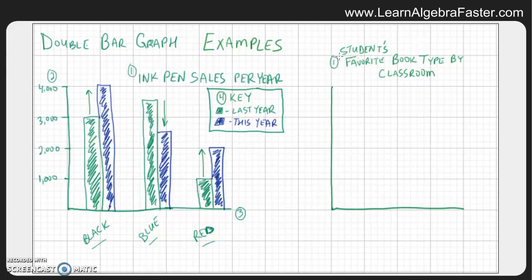So we're going to have to measure all three of those things. Obviously the number is going to be on the vertical axis. We'll go ahead and label it. The favorite book type is how we're going to group these. So we're going to say a comic book, a chapter book, and a picture book.